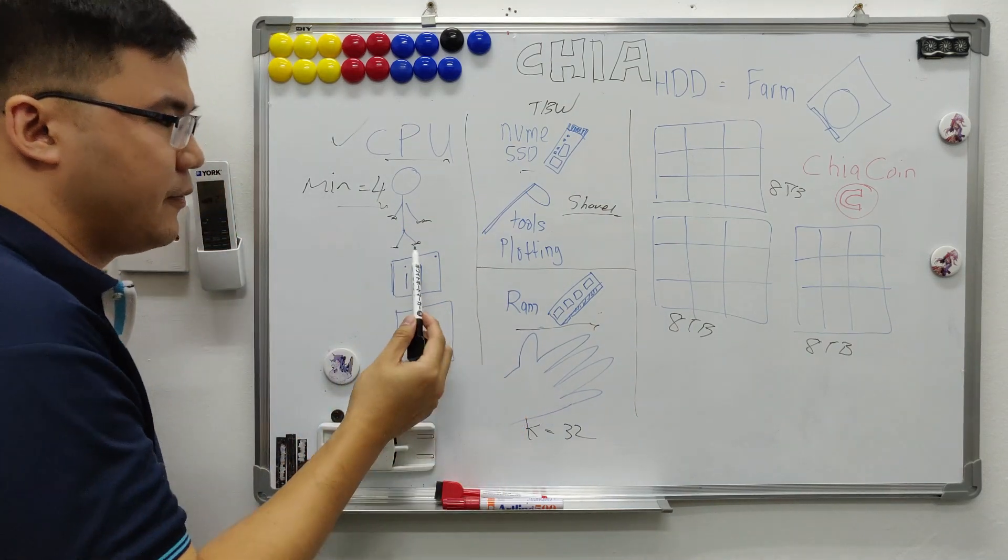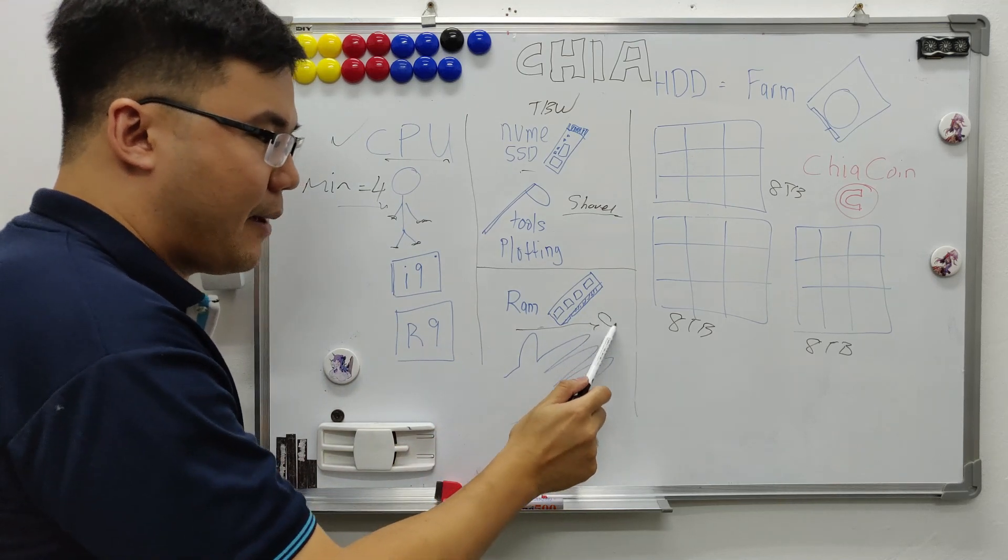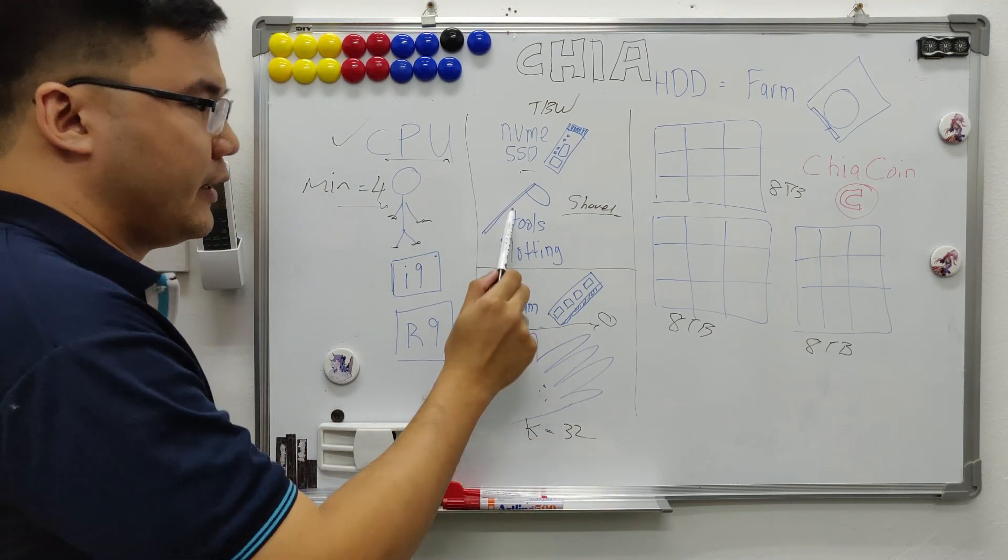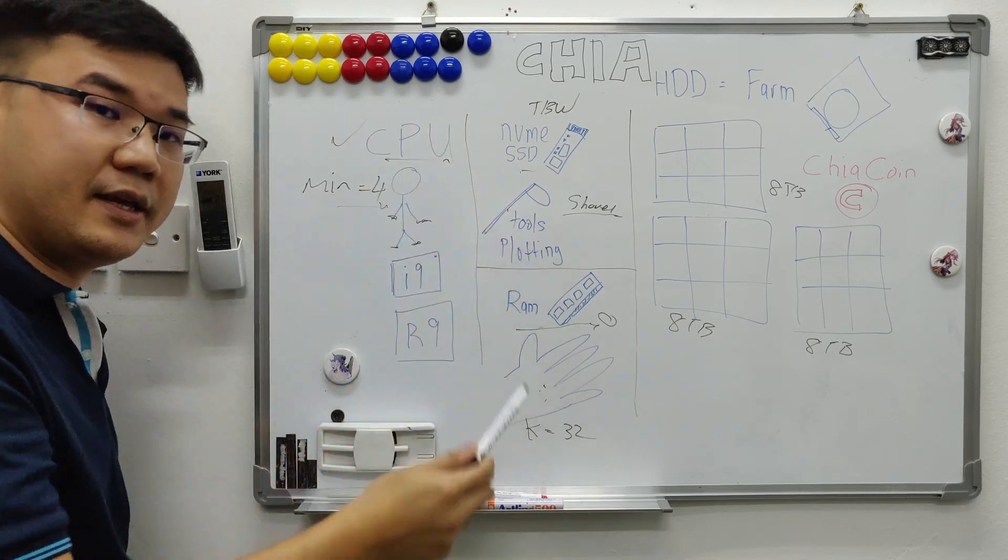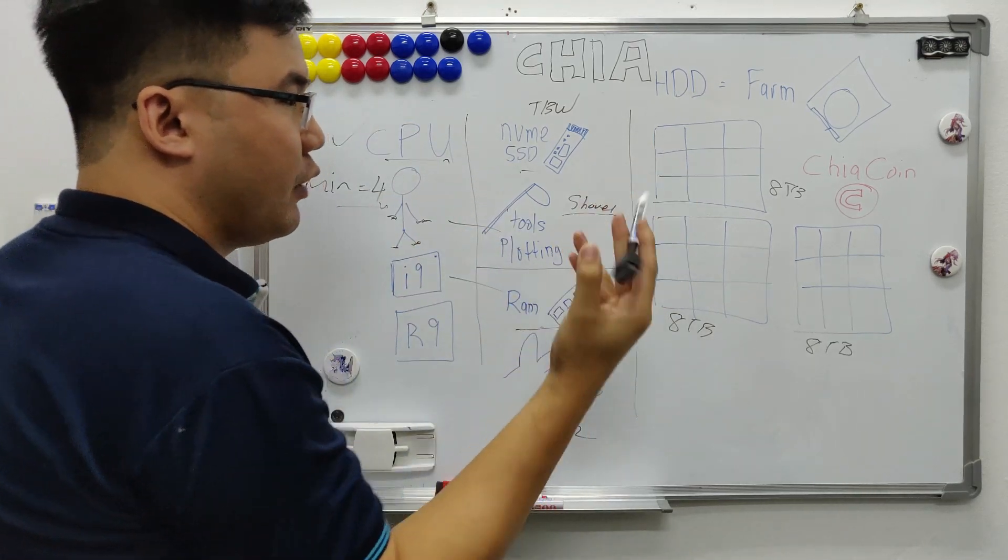So how this guy works is, this farmer, your CPU core, will take some ram, your glove, your shoes and stuff, and take the shovel, which is your NVMe. It will connect these two resources and start plotting the land.